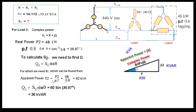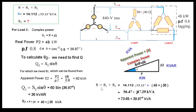S2 multiplied by cos theta gives the real axis component, and sin theta gives the imaginary axis component. Now using Q2 = S2 × sin theta, substituting the values gives Q2 = 36 kVAR. Putting these into the formula for complex power S2 = P2 + jQ2, we can now find the total combined power S = S1 + S2.